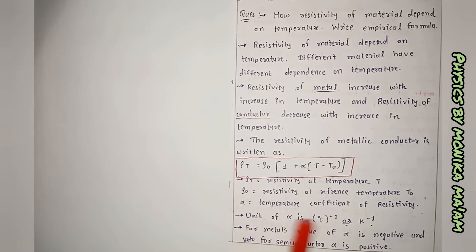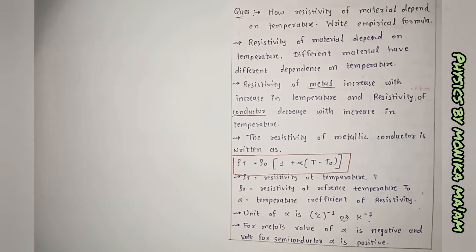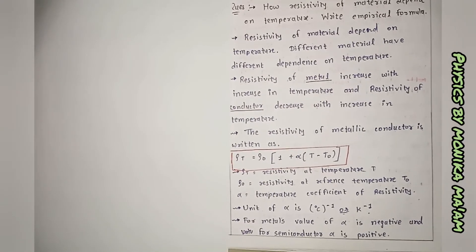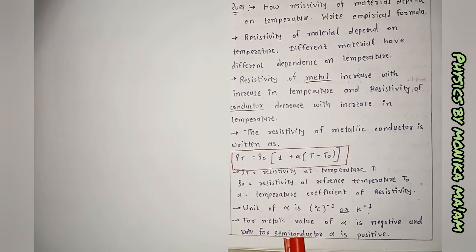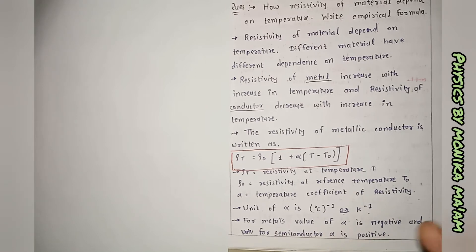From the unit of alpha you can identify its value in a numerical problem. For metals, the value of alpha is negative, and for semiconductors, alpha is positive. This is important to remember as it may be useful in MCQs.